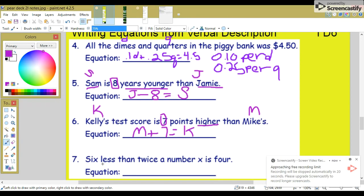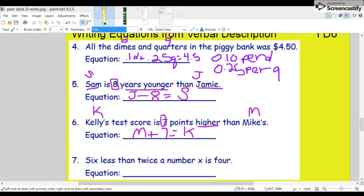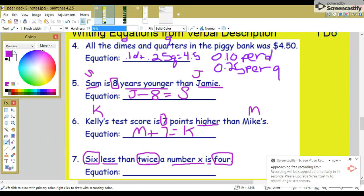Seven: Six less than twice the number x is four. After analyzing this problem, we have six less, that's a minus six. Twice means times two. A number x is, is equal sign, four.